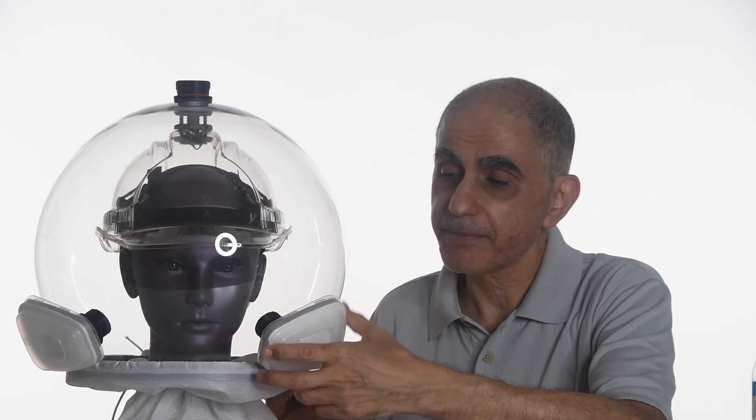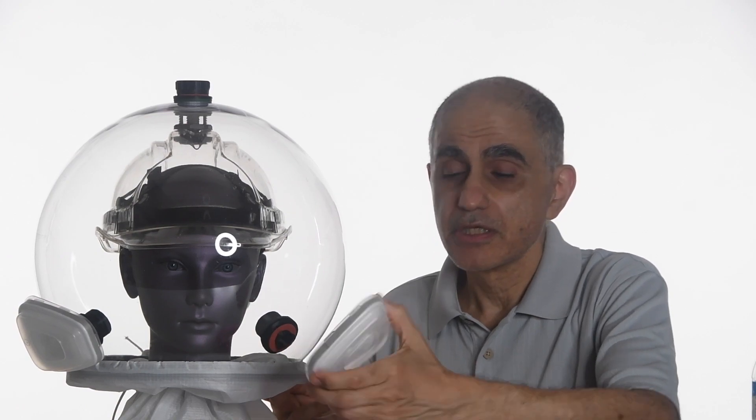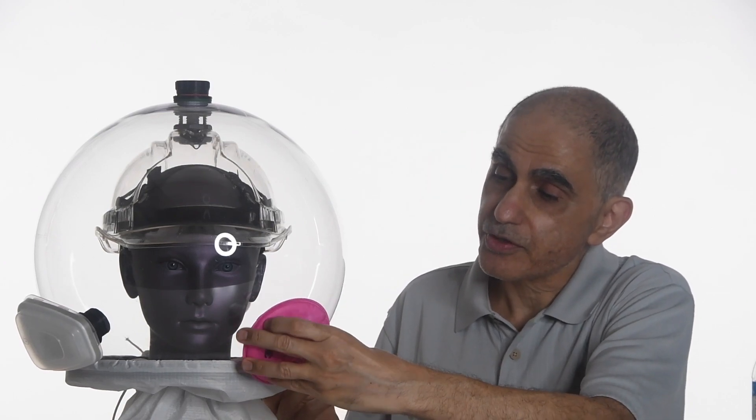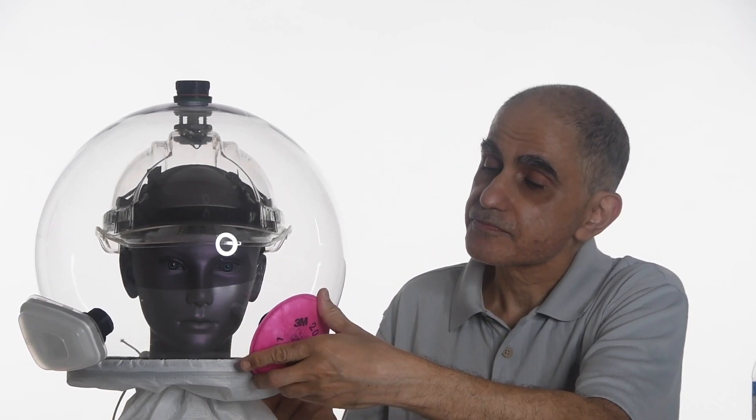The filters we use are standard N95 filters available from 3M and others. So for example, we use a bayonet mount, which is the 3M mount. You can take out this is an N95 filter that's readily available. You can replace it with a P100 filter if you want greater filtration, depending on your case.